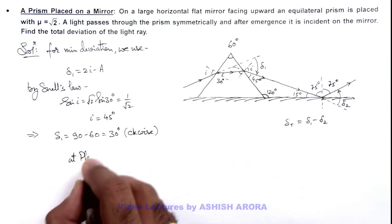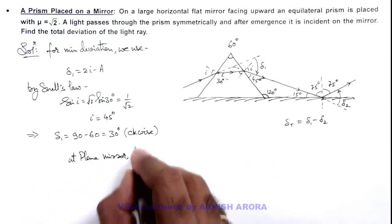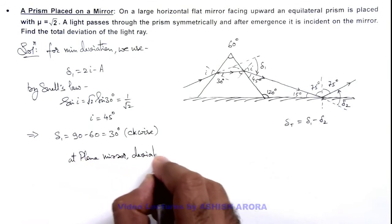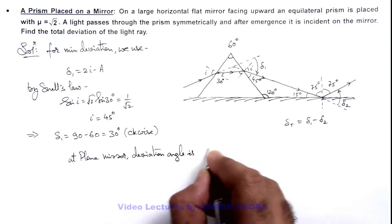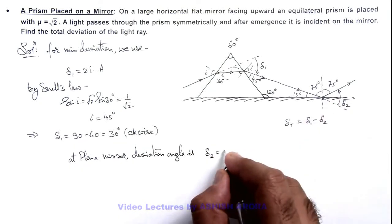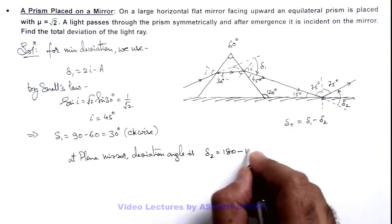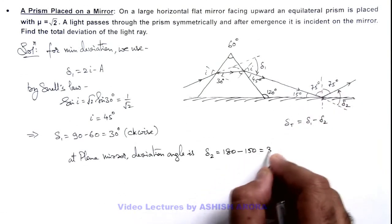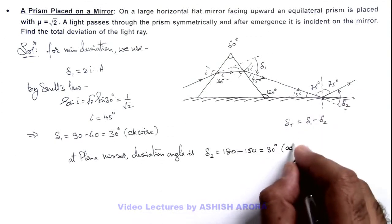So we can write at plane mirror, deviation angle, so this angle deviation angle is delta 2, which can be written as 180 minus twice of 75, this is 150, so this will be 30 degrees and here it is in anticlockwise direction.